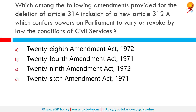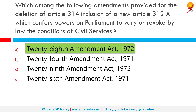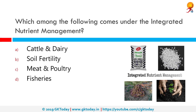Which among the following amendments provided for the deletion of Article 314 and inclusion of a new Article 312A, which confers powers on Parliament to vary or revoke by law the conditions of civil services? The correct answer is the 28th Amendment Act of 1972. The objective was to rationalize civil service rules and make them uniform across those appointed prior to and post-independence.